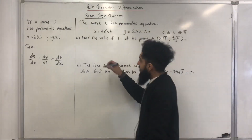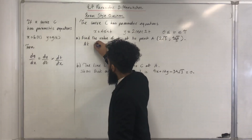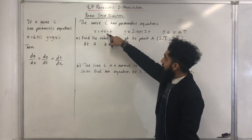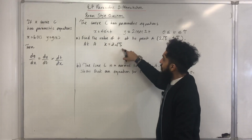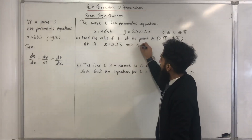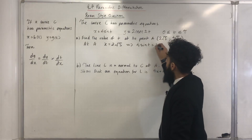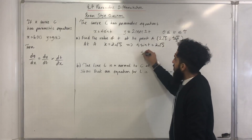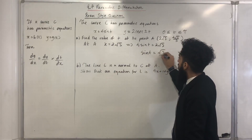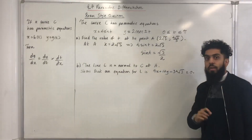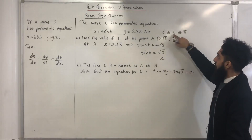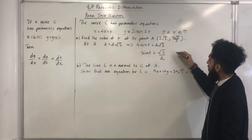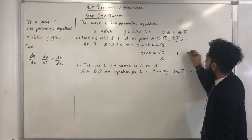First of all we know that at A, x is equal to 2 square root 3. Now x is 4 sine t, so x equal 2 square root 3 implies that 4 sine t is equal to 2 square root 3. Making sine t the subject gives us sine t equal square root 3 over 2. Putting our calculator on radian mode and taking sine inverse on both sides gives us t equal pi over 3.